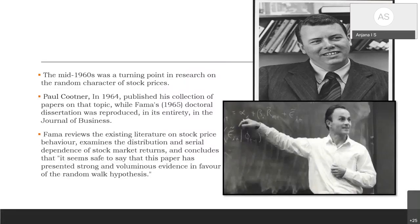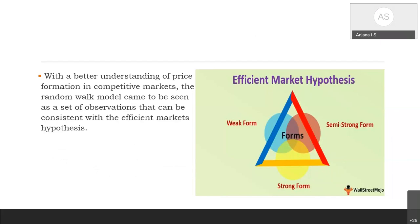Research on the random character of stock prices led to a collection of papers published in 1964, and Eugene Fama's 1965 doctoral dissertation was reproduced in the Journal of Business. Fama studied existing literature on stock price movements and found strong and voluminous evidence that stock prices move in a very random fashion, supporting the concept of the random walk theory. After further refinement, this model came to be known as the Efficient Market Hypothesis.